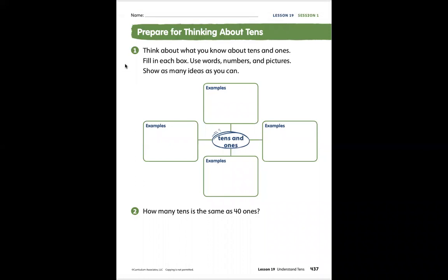How they could be different, how they are made up. Here it says think about what you know about tens and ones. Fill in each box, use words, numbers, and pictures. Show as many ideas as you can.